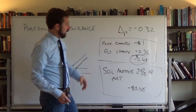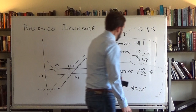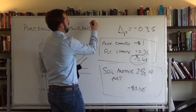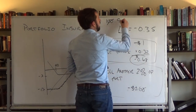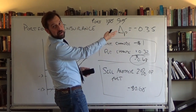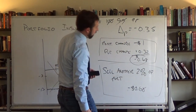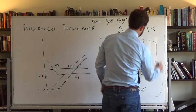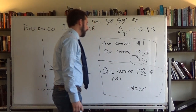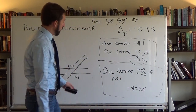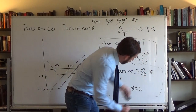It falls again to 98, so we have to rebalance again. The delta goes to negative 0.35. The portfolio started at 100, went to 99 where the delta was negative 0.32, and now at 98 the delta is negative 0.35. If this was a real protective put position we wouldn't have to do anything, but since this is a dynamic replication, we have to sell another 3% of our portfolio so that our position matches.